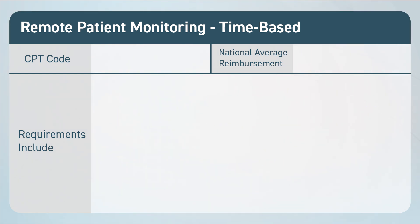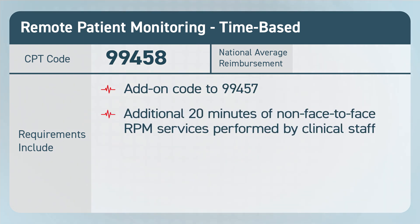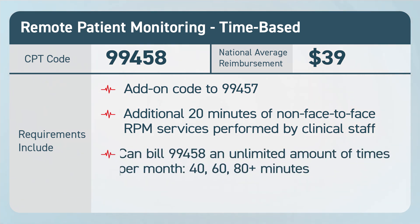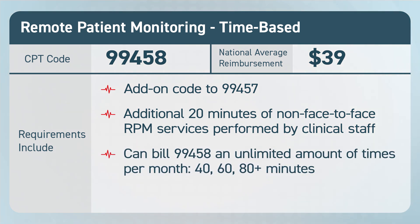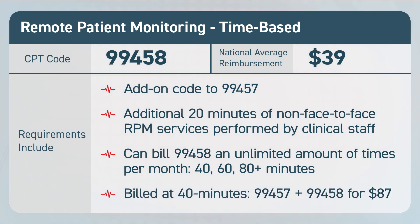There is an add-on time code 99458 for an additional 20 minutes of RPM services. Its current national average reimbursement rate is $39. 99458 can be billed an unlimited amount of times per calendar month — so about 40, 60, 80 plus minutes.